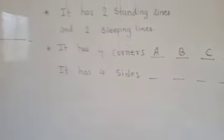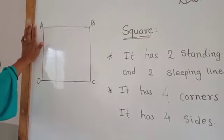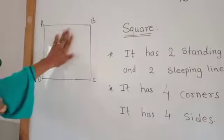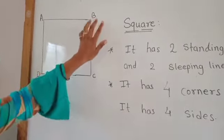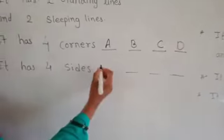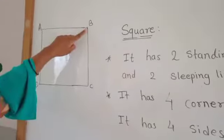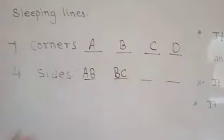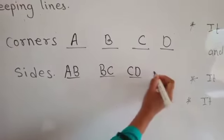Now, sides. Sides are indicated with the starting and ending point. The starting point of this line is A and ending point is B, so the side name is AB. A square has four sides: side AB, side BC, side CD, and side DA.